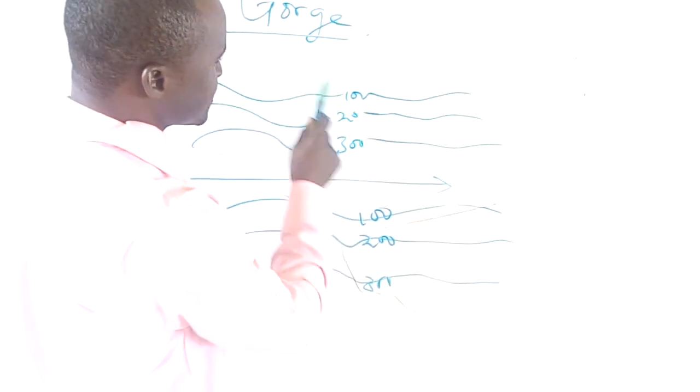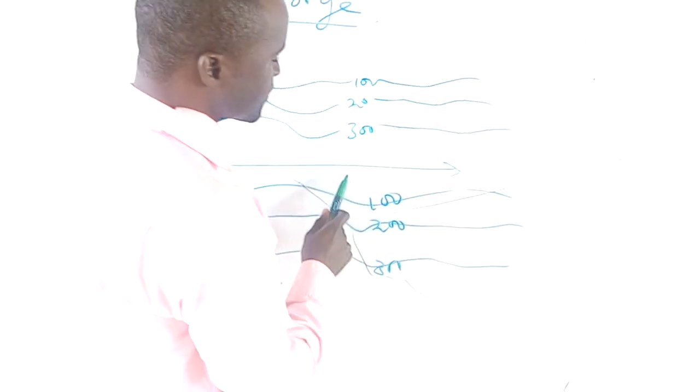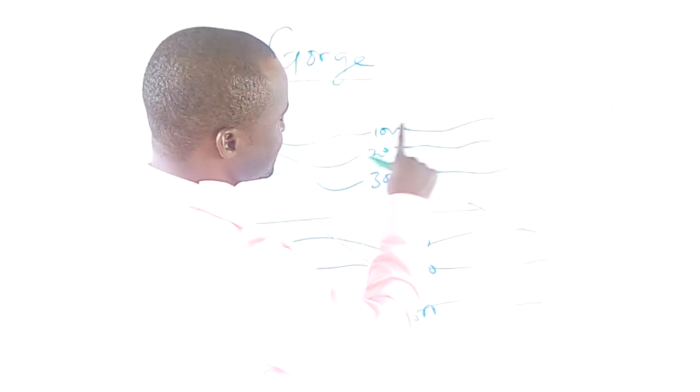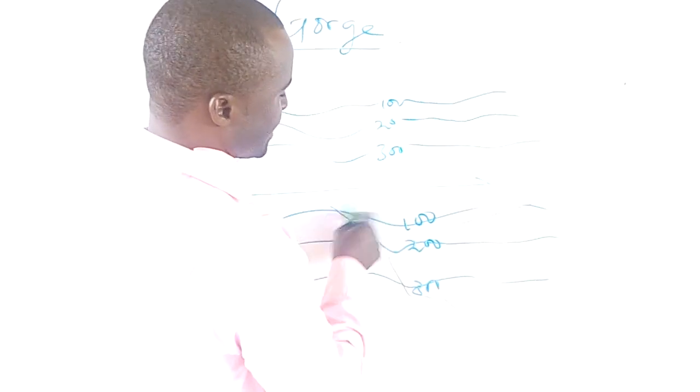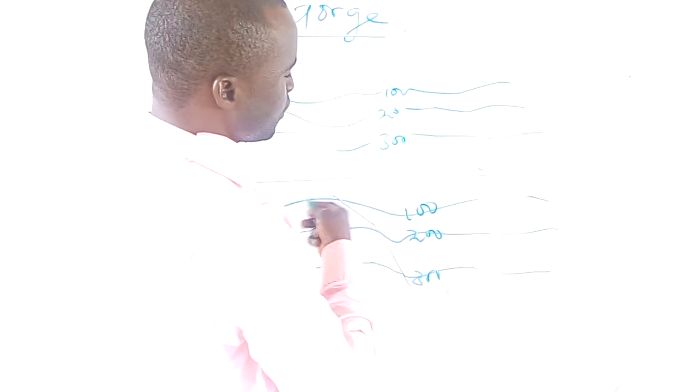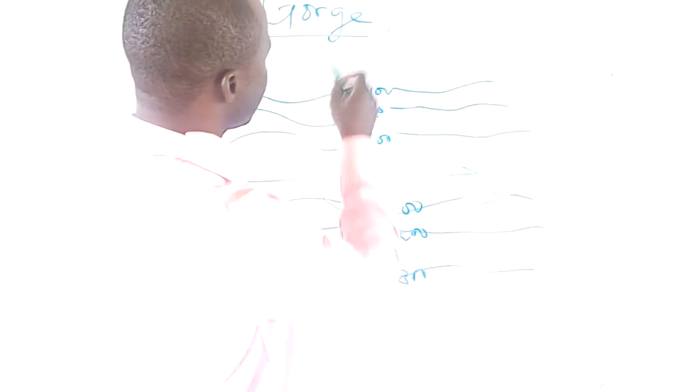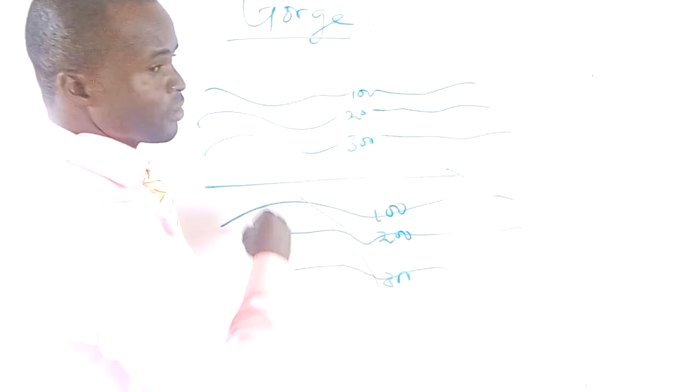And we said a gorge is a steep-sided valley with streams or rivers. These are the steep-sided valley and this is what? Gorge. This is river that is flowing and we classify it as what? A gorge. Thank you.